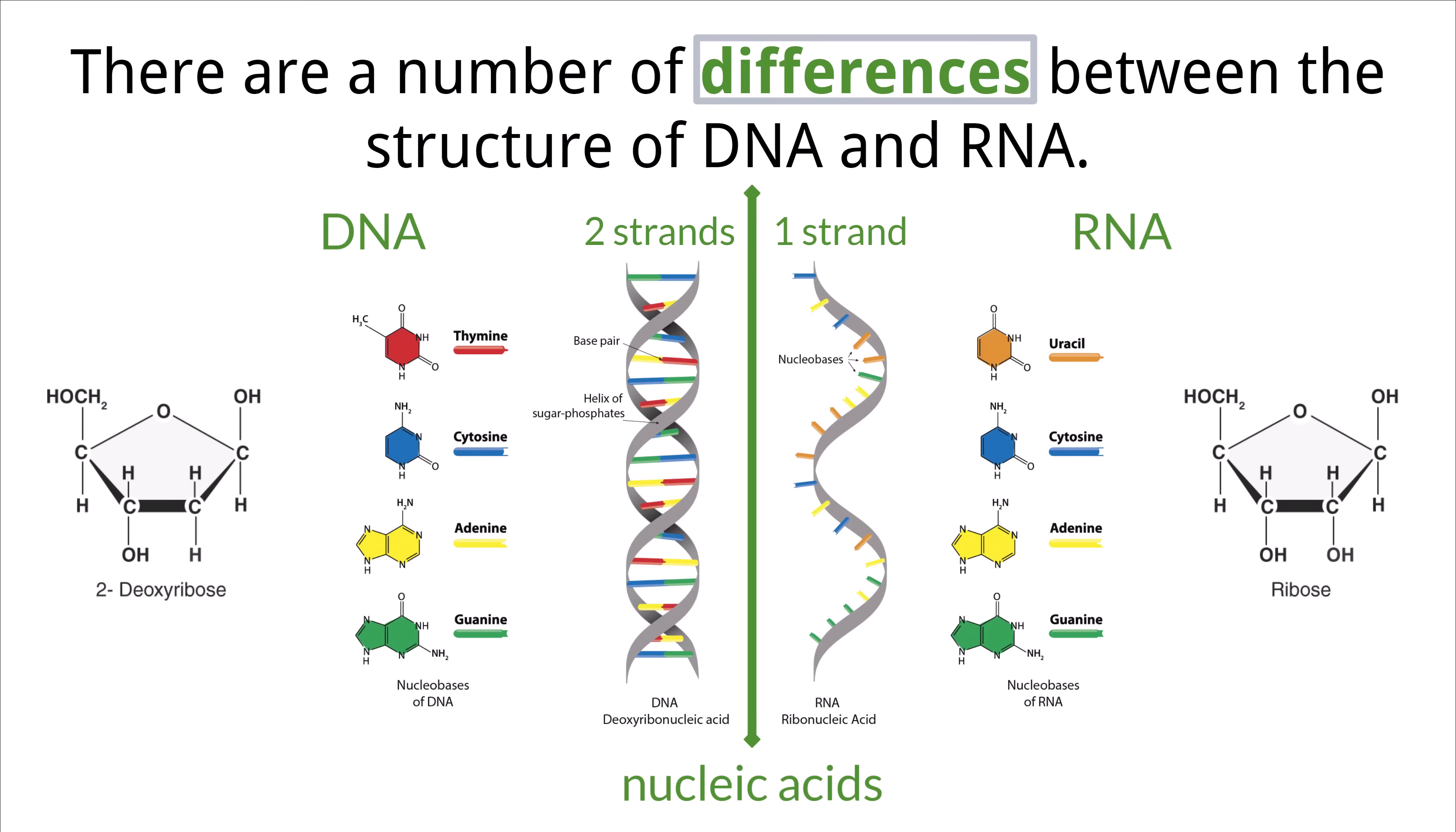Next, the bases that make up these two strands are slightly different. We stated already that DNA contains the bases adenine, guanine, cytosine, and thymine. RNA also contains adenine, guanine, and cytosine, but the fourth base is uracil. Not thymine.